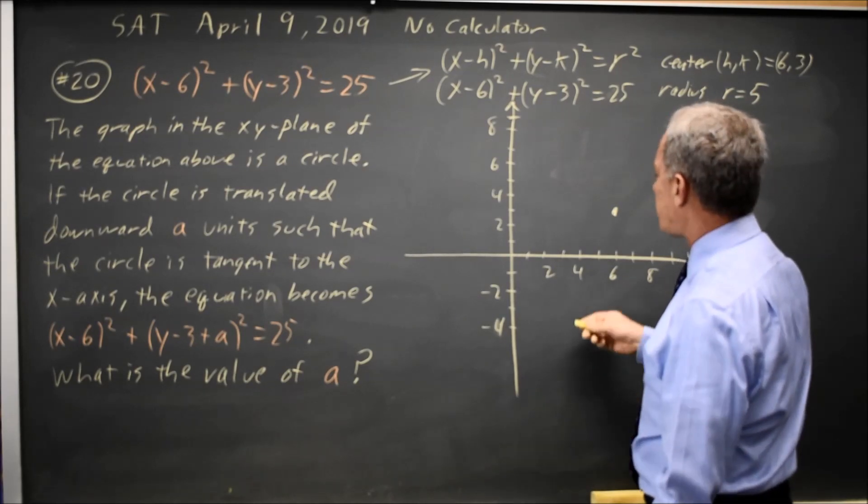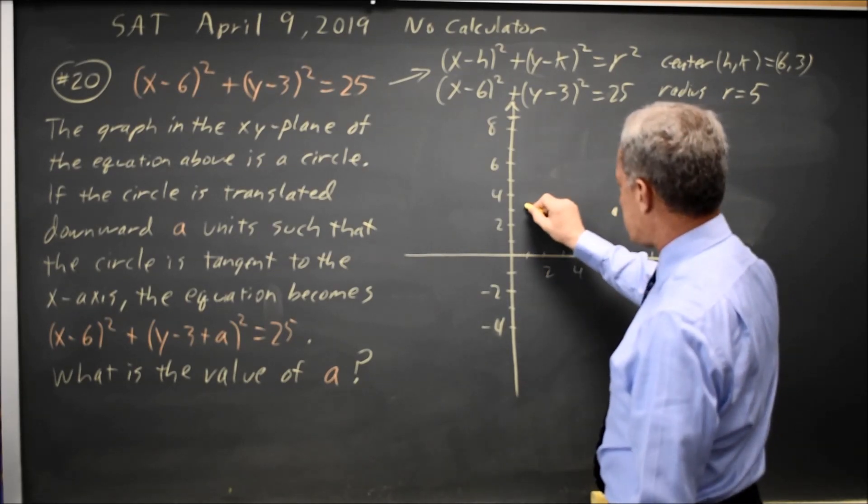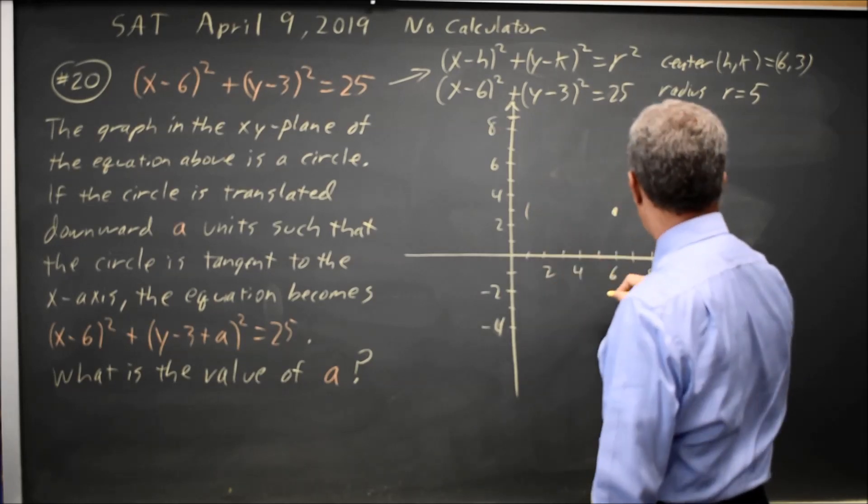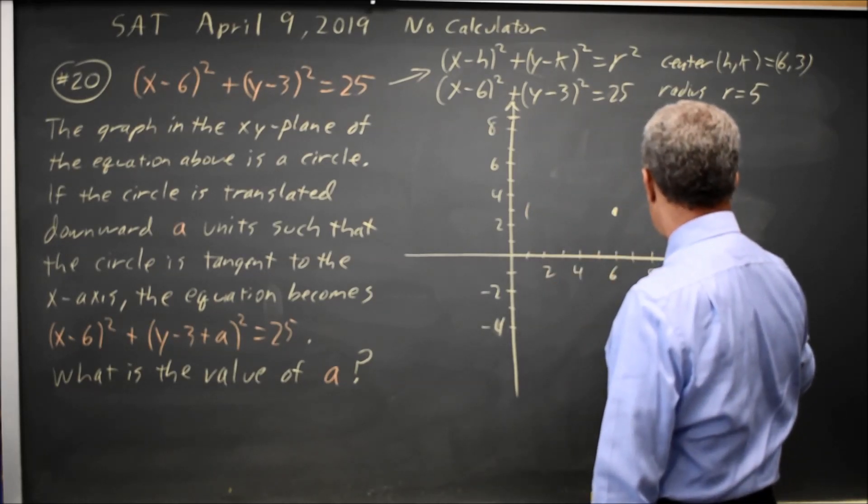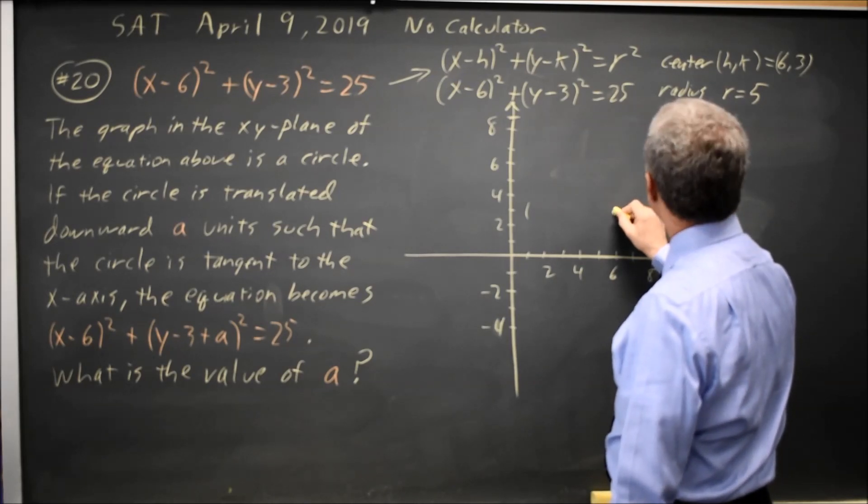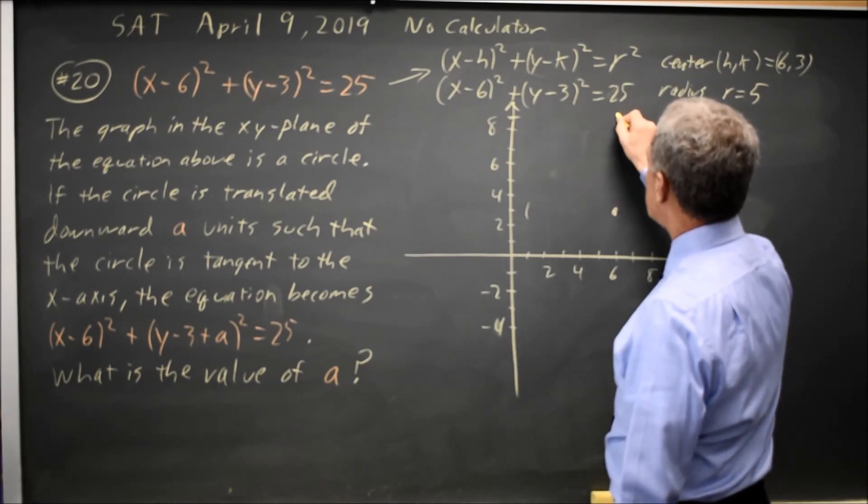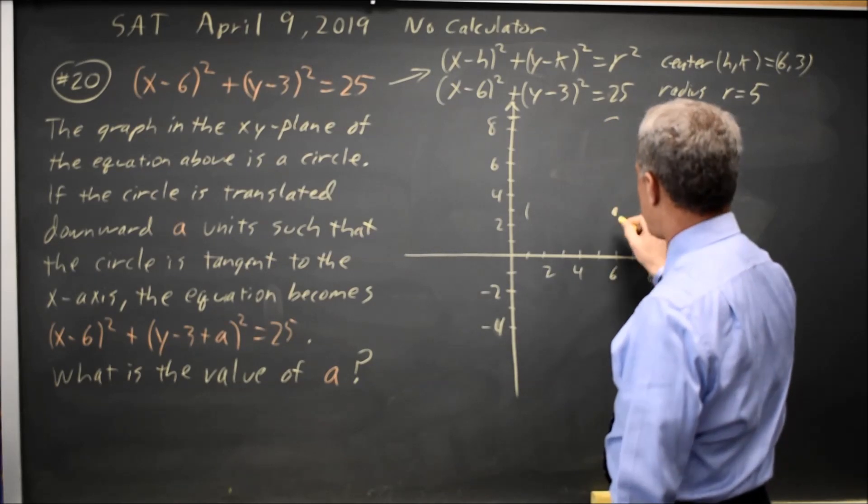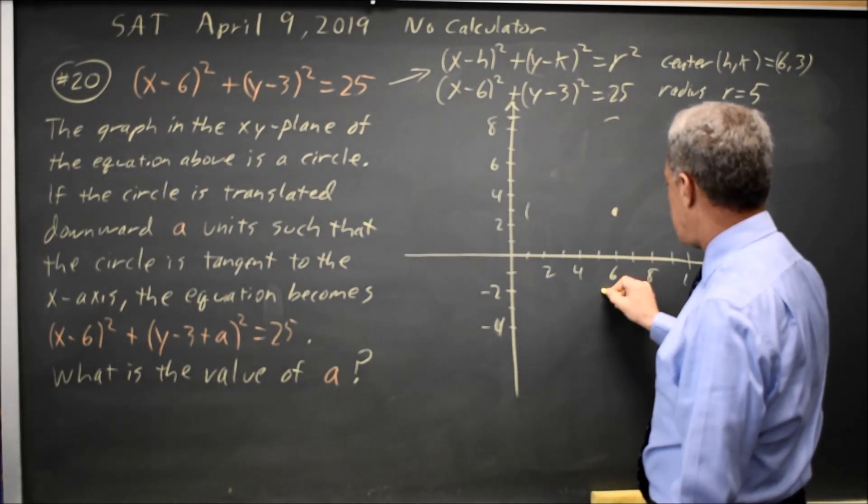And radius 5 means I go 5 below 6. 5 to the left of 6 is 1. 5 above 6 is 11. 5 up from y equals 3 would be y equals 8. And 5 down from y equals 3 would be y equals negative 2.